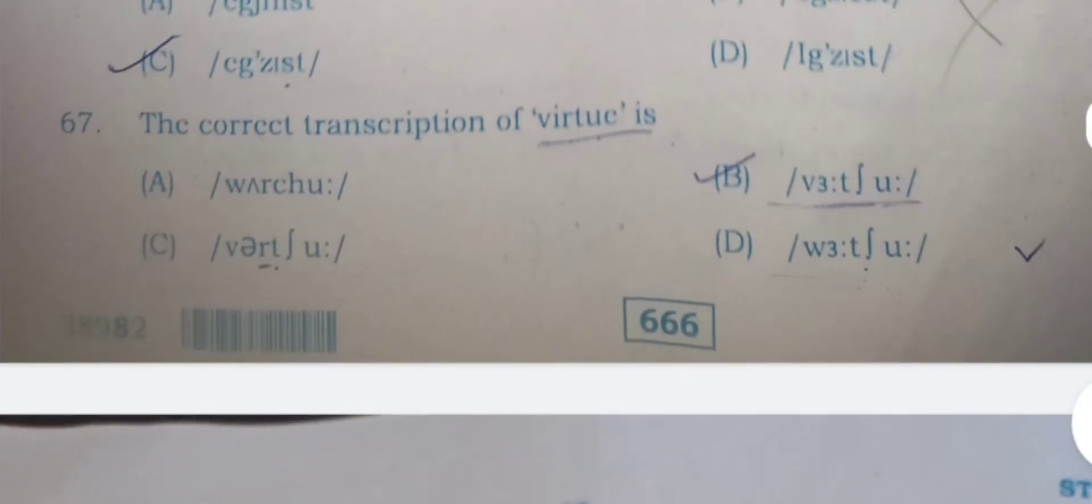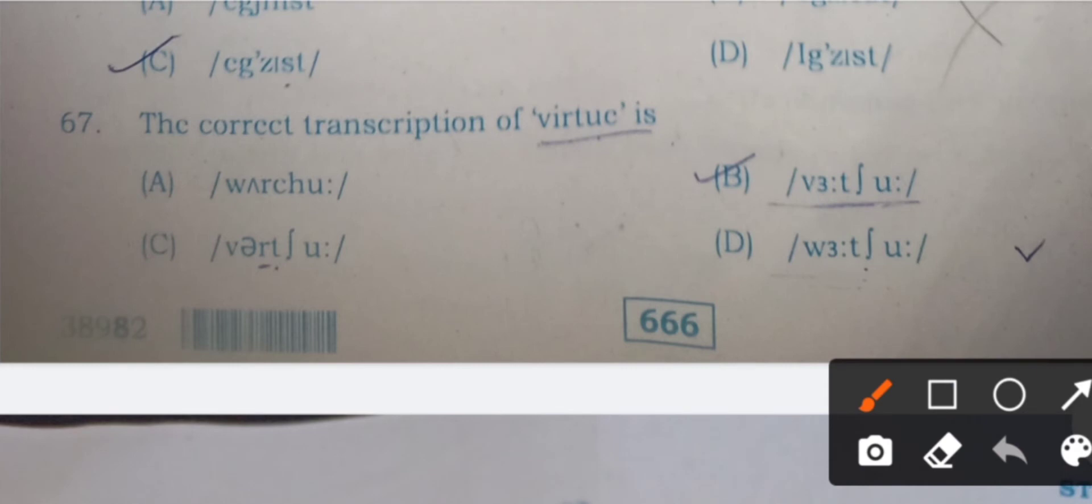Question 67: The correct transcription of virtue is - four pronunciations are given in four options. Here B is the right answer. It will be written like this with the schwa sound, then CH and U. Virtue.